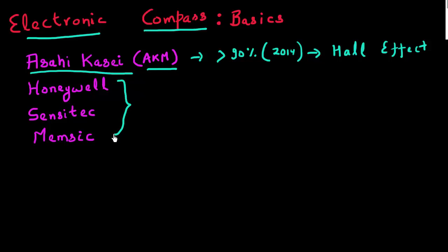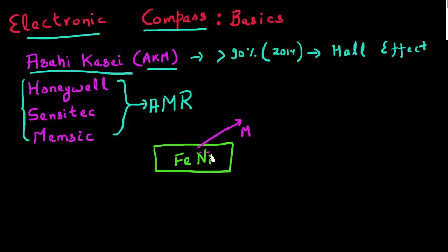There are other players which are competitors to AKM, and they make compasses which are based on the magnetoresistance effect, or specifically, the anisotropic magnetoresistance. In these companies - Honeywell, Sensatec, etc. - they use a material which is often like a combination of iron and nickel. The resistance of this material changes depending upon the magnitude of the magnetic field and also the angle of the magnetic field with respect to this resistor. But as I said, majority of the market is dominated by Hall effect based sensors.